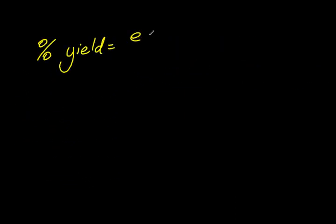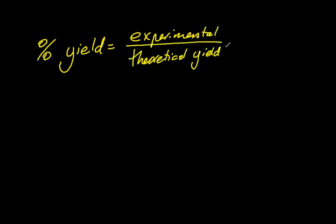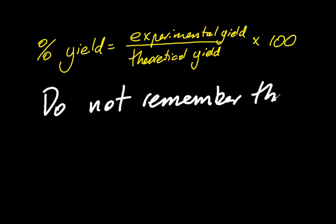If you insist on the equation, the percent yield is the experimental yield, what you've got in your experiment, divided by theoretical yield, what you'd get in a perfect world, multiplied by 100. But don't remember it. Just work it out from first principles every time.